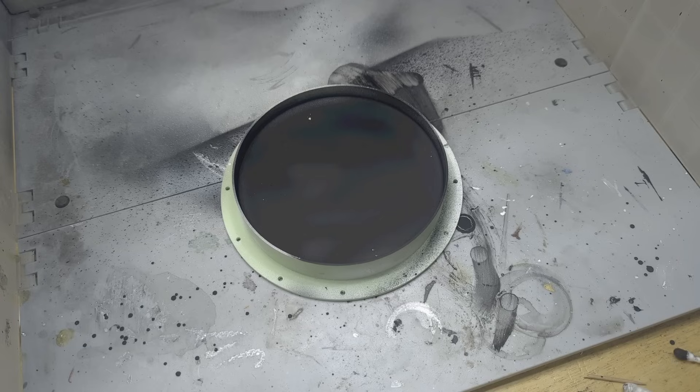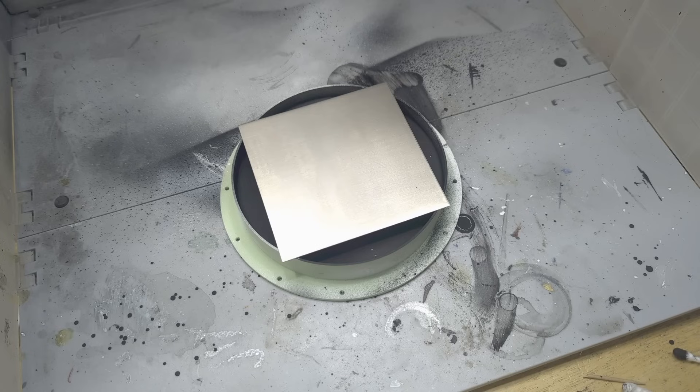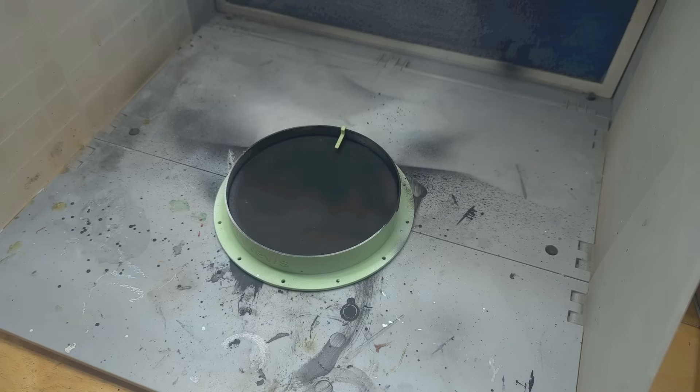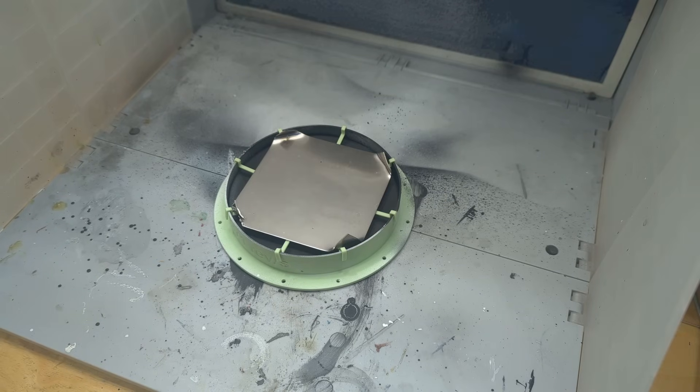For the electroplating setup itself, I decided to use the blank as its own container for the electrolyte. To make that work, I had to bend the corners of my nickel plate so it would sit nicely inside. Then, I used a few plastic hooks to suspend it just above the mirror surface.